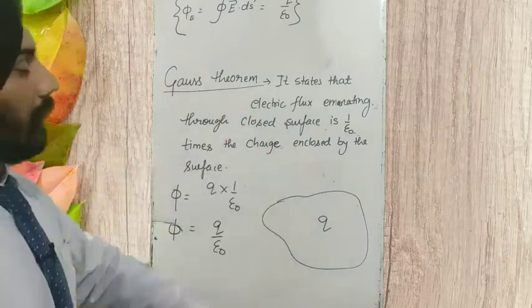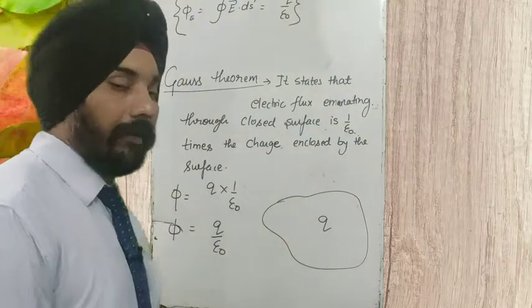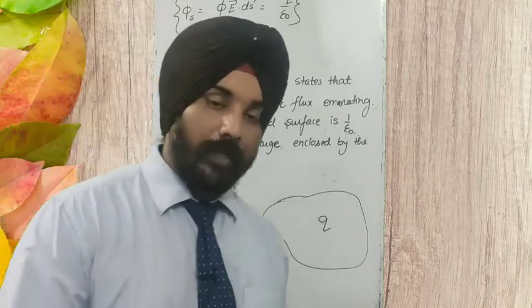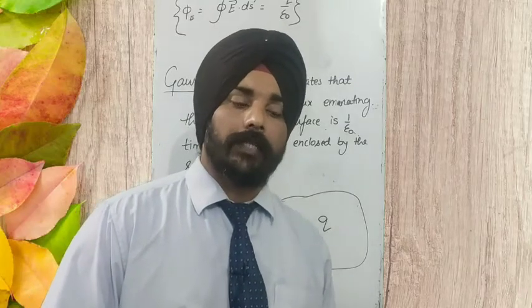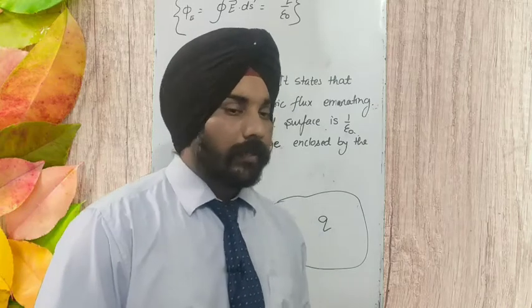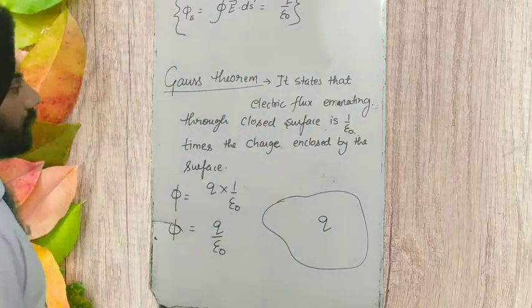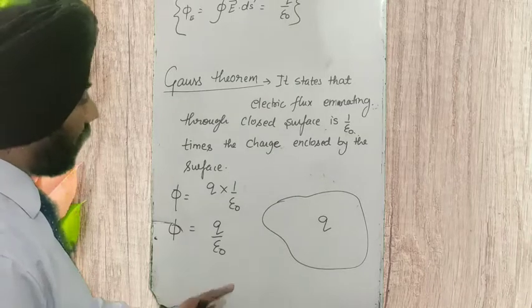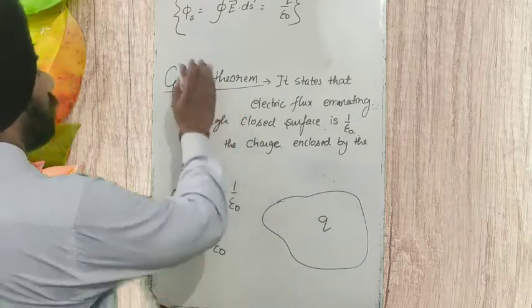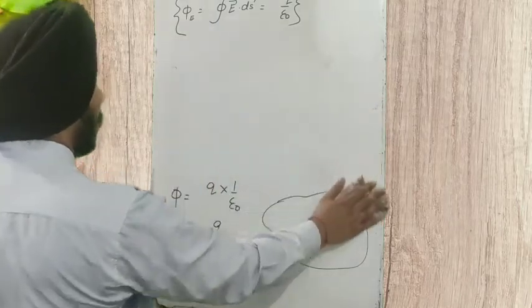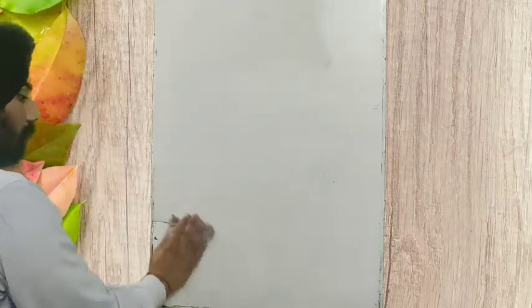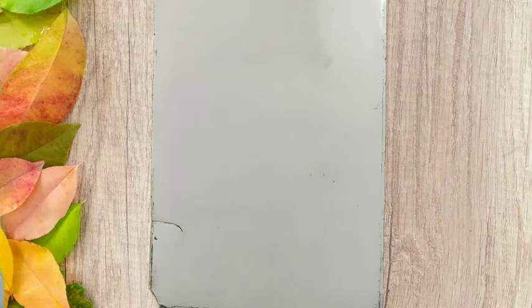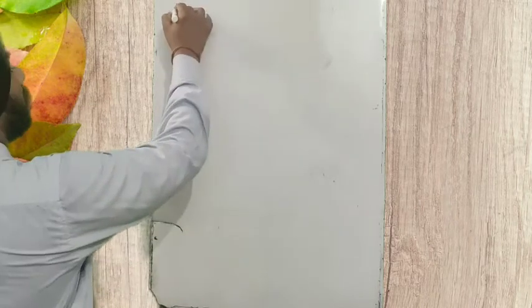Gauss theorem's statement you have to learn because it is a very important topic. In board examinations they always ask you to state the Gauss theorem, prove it, and give one application of the Gauss theorem along with the statement. So it is very important. Here we are going to discuss how to derive the Gauss theorem using the Coulombian law that we studied in the first chapter.